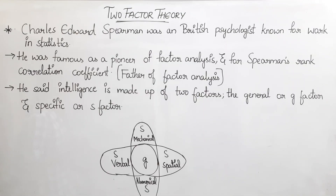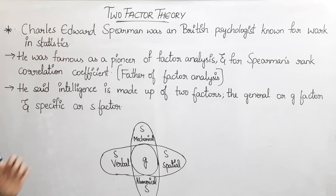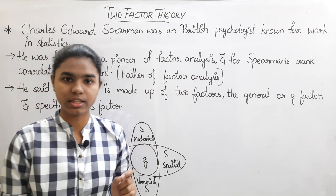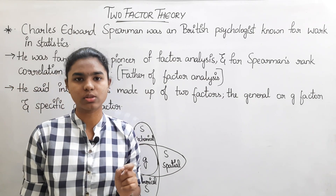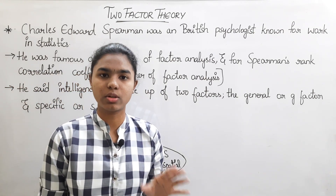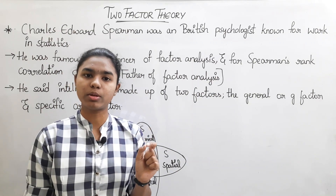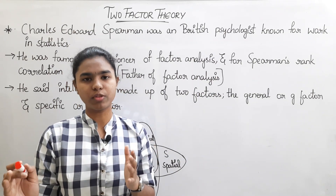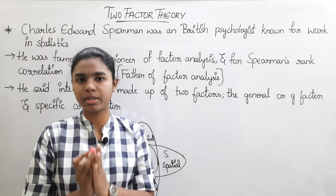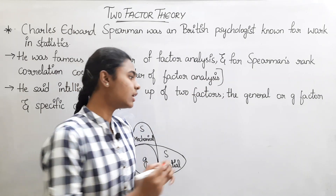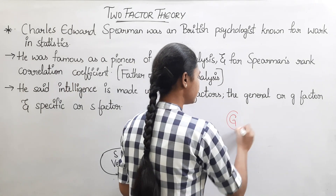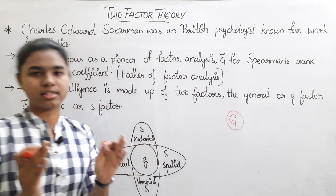Now we will talk about two-factor theory. This two-factor theory is given by Charles Spearman. In the last class, we talked about unifactor theory, which was offered by Alfred Binet. He said we have a general ability to perform any task.